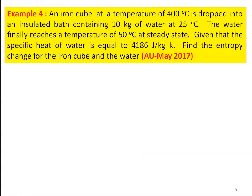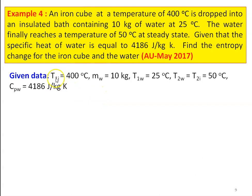We take the fourth example from the Anna University question paper, May 2017. An iron cube at 400°C is dropped into an insulated bath containing 10 kg of water at 25°C. The water finally reaches 50°C at steady state. Given: specific heat of water = 4186 J/kg·K. Find the entropy change of the iron cube and the water. Initial temperature of iron cube: 400°C; mass of water: 10 kg; initial temperature of water: 25°C; final equilibrium temperature: 50°C.